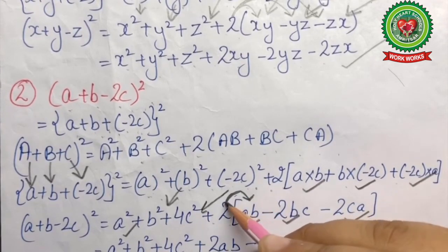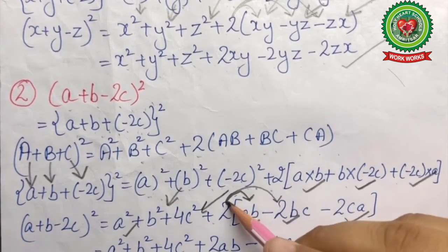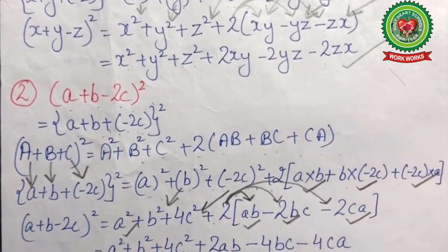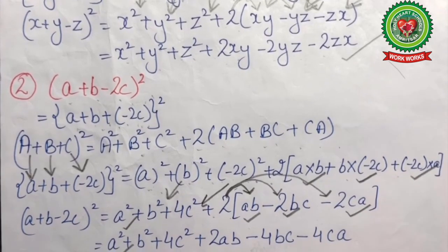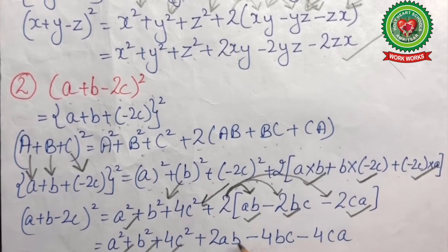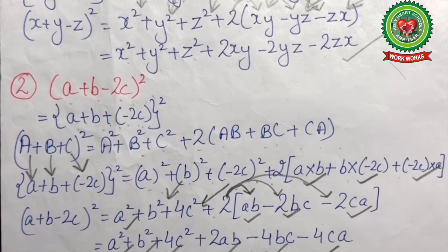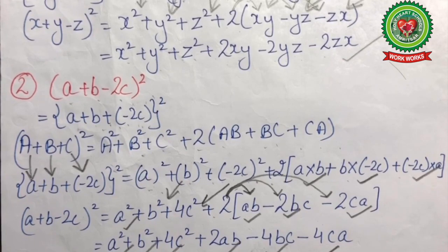Multiplying 2 with all the three terms inside the bracket gives us the final answer: a²+b²+4c²+2ab-4bc-4ca. So students, you should now be clear with the topic of (a+b-c)². In your homework you have got a worksheet based on this topic — solve that worksheet. Have a good day, thank you.